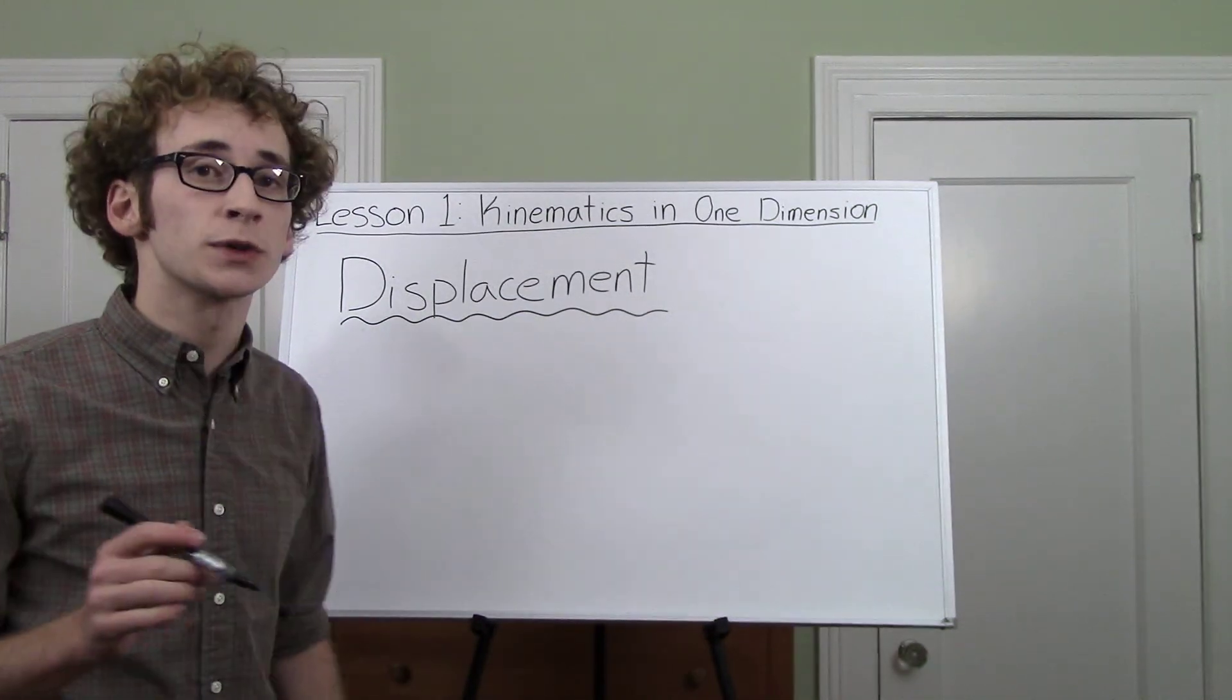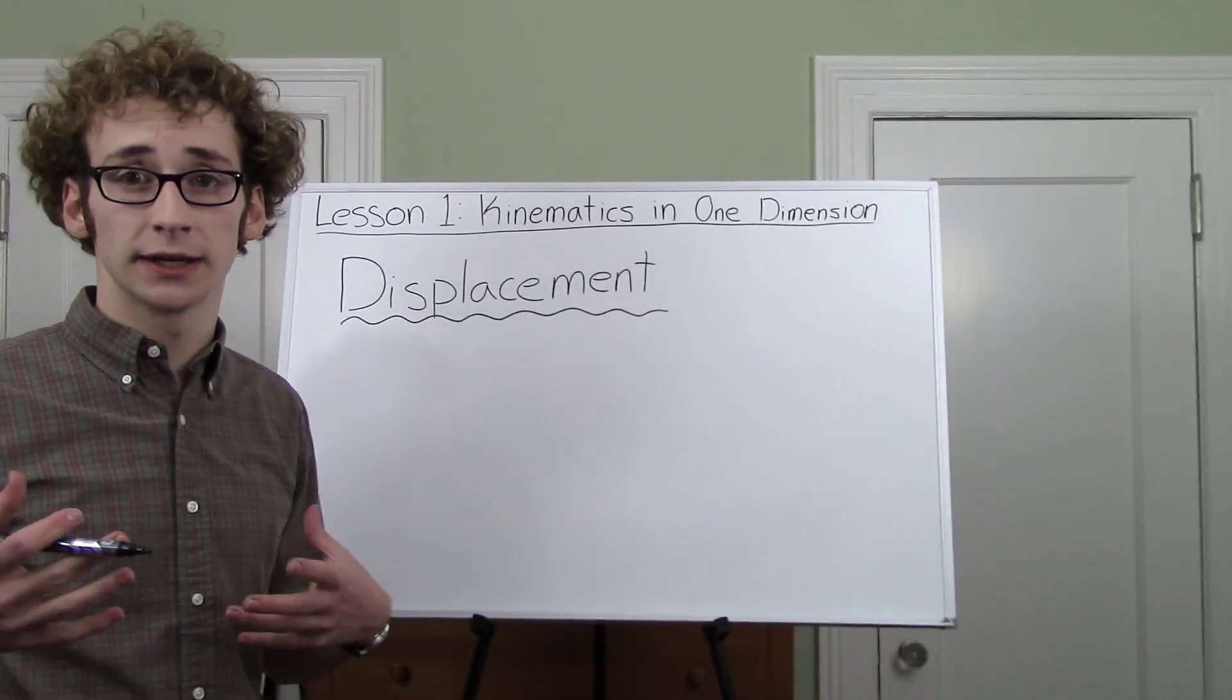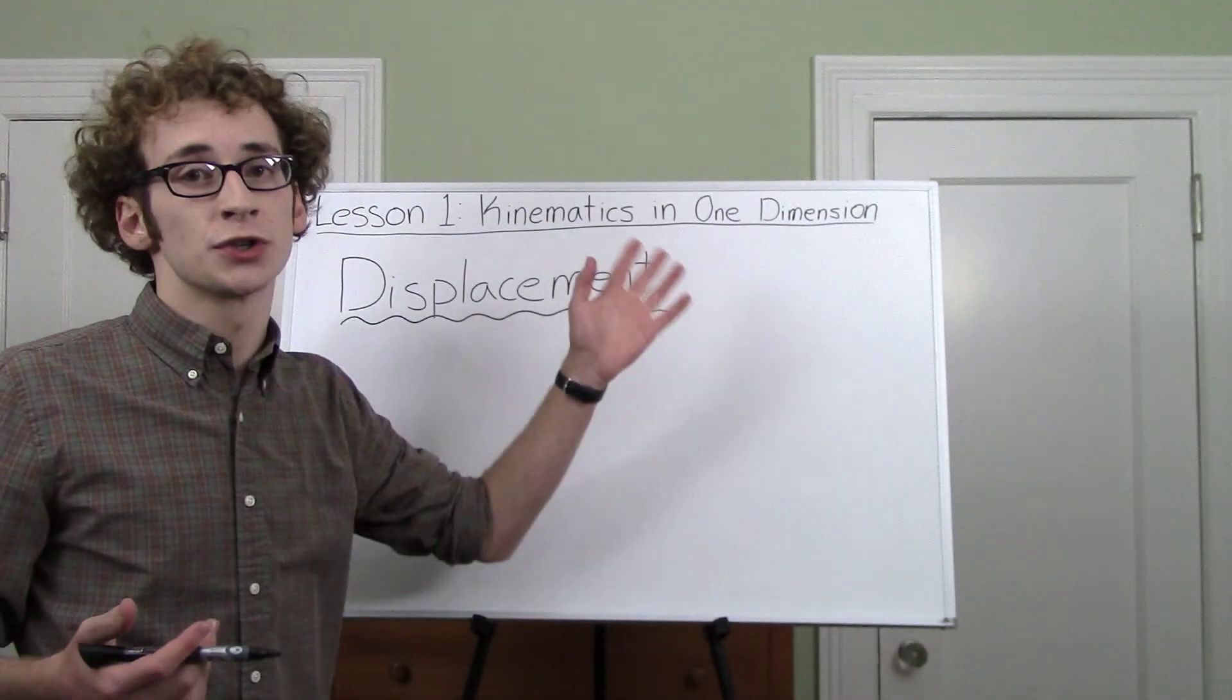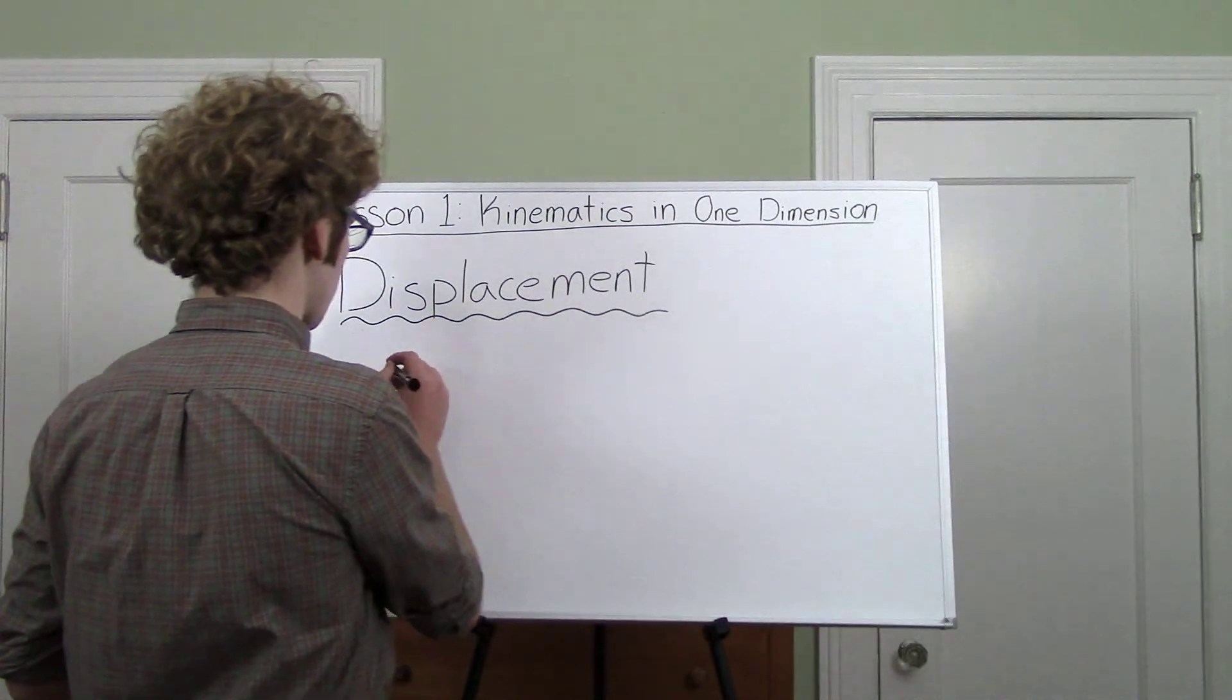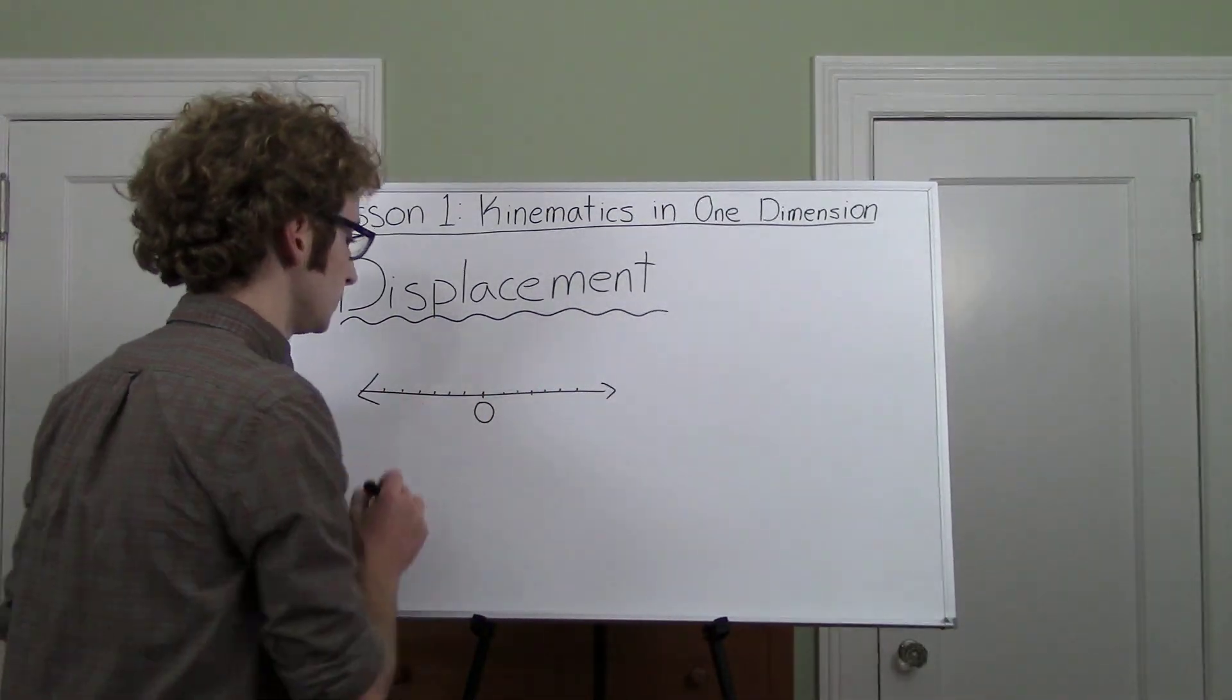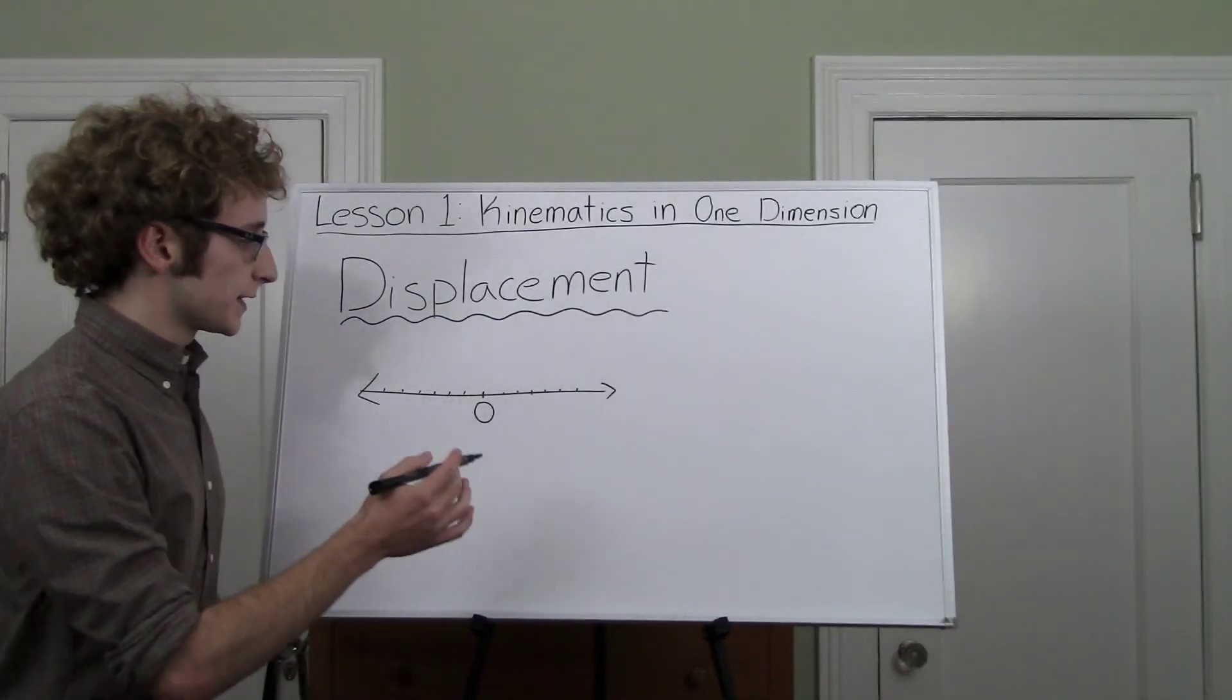So displacement is your change in position. You may have covered a total of one mile, but your position is exactly where it was before. So you haven't changed your position at all. Thus, your displacement is zero. In physics, when we're talking about position, we like to use an xy coordinate plane. Since we're using one dimension, we'll just use x. So we'll work with x coordinates.